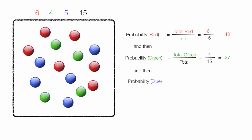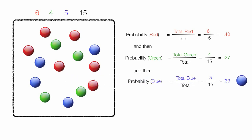And then I'm going to calculate the probability of picking a blue marble, which is total blue out of the total, which is equal to five out of 15, and this equals 0.33. That's the probability of picking a blue marble.